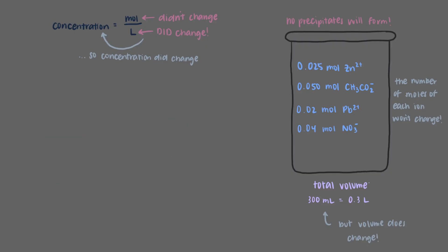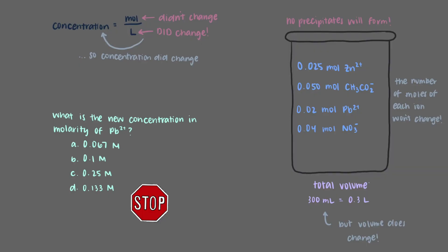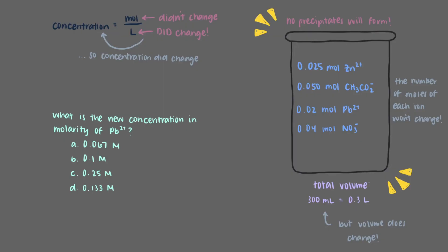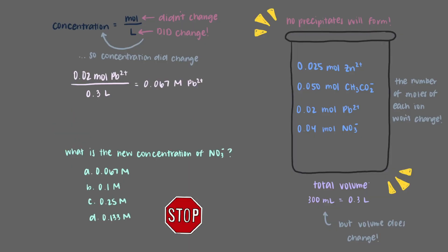Now we want to calculate the new concentration of each ion. We have 0.02 moles of lead ions and the new volume is 300 milliliters or 0.3 liters. Dividing 0.02 moles by 0.3 liters gives a new lead ion concentration of 0.067 molar. For nitrate ions, we still have 0.04 moles, and dividing by 0.3 liters gives a new concentration of 0.133 molar.